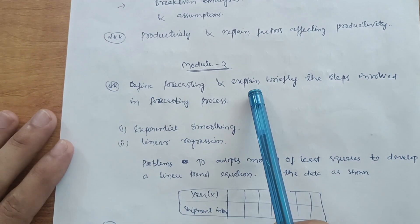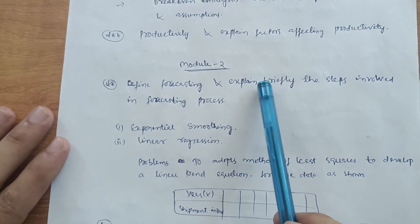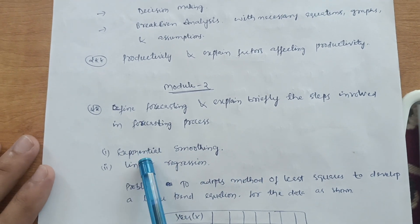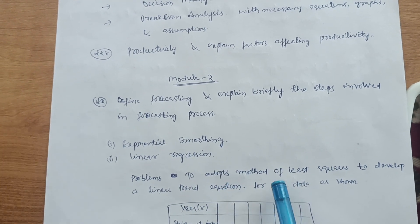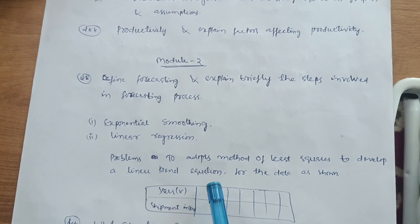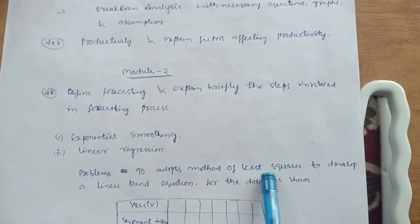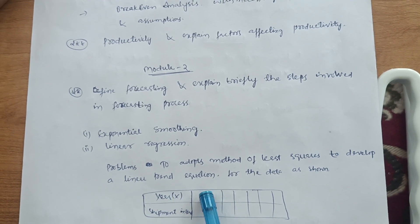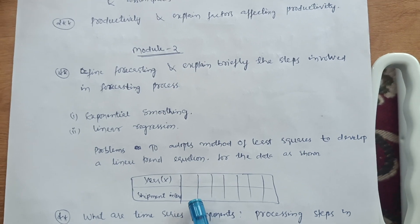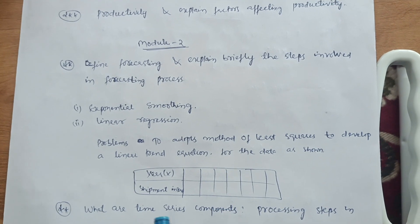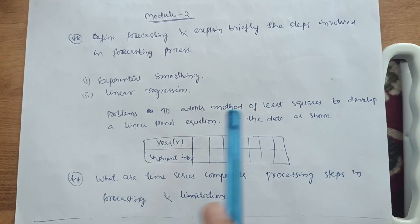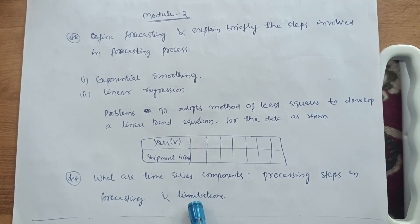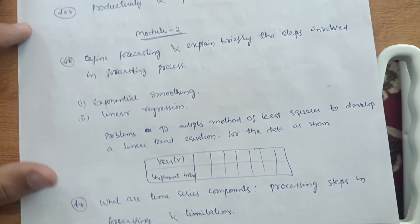In Module 2, the important question is: define forecasting and explain briefly the steps involved in the forecasting process. Also, in the problem part, they will ask exponential smoothing and linear regression. Some problems involve the method of least squares to develop a linear trend equation for given data — you will be given year and shipment in tons and have to find values for 10 or 12 years. Also cover time series components, processing steps in forecasting, and its limitations. These four types are enough to secure good marks in Module 2.